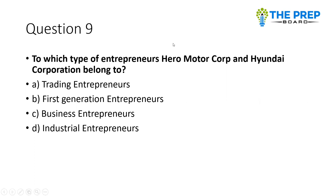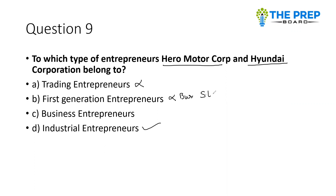To which type of entrepreneur do Hero MotoCorp and Hyundai Corporation belong? Options are: trading entrepreneur, first generation entrepreneur, business entrepreneur, or industrial entrepreneur. The correct option is 'industrial entrepreneur' — they are big industries, so they are part of industrial entrepreneurs.